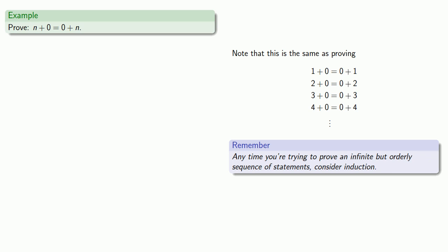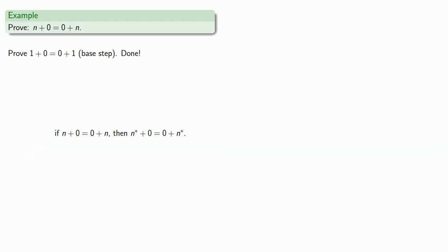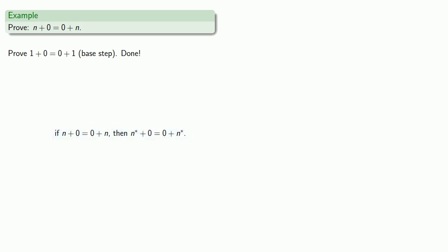A proof by induction requires two things. First, we have to show that our statement holds for the first case — we have to prove that one plus zero is equal to zero plus one. That's the base step, and we just did that. The second thing is to show that if our statement is true for n, then it's also true for the successor of n. Since we're trying to prove a conditional, we can always assume the antecedent. So suppose n plus zero is equal to zero plus n.